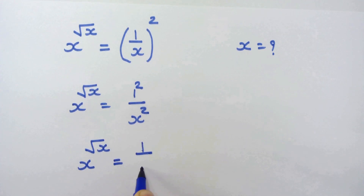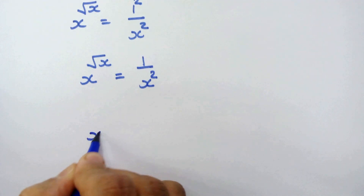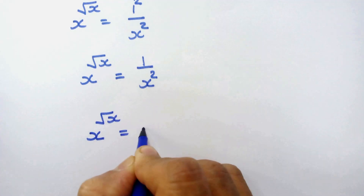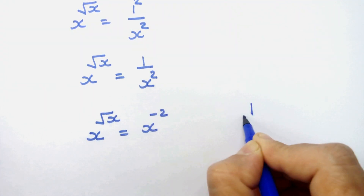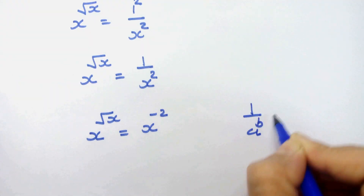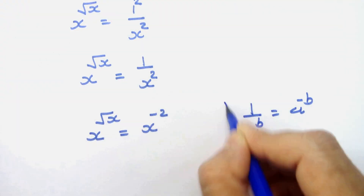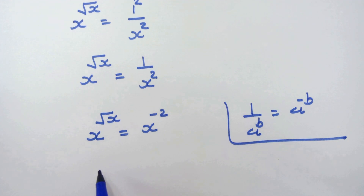Since 1 squared remains 1, we have x raised to square root of x equal to 1 upon x squared. Now we can write this as x raised to square root of x equal to x raised to minus 2, because 1 upon a raised to b can be written as a raised to minus b.